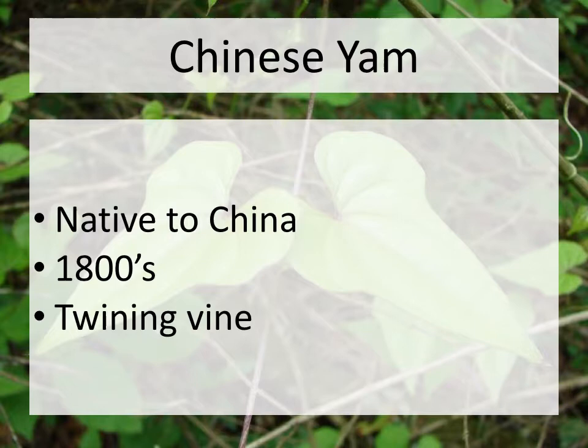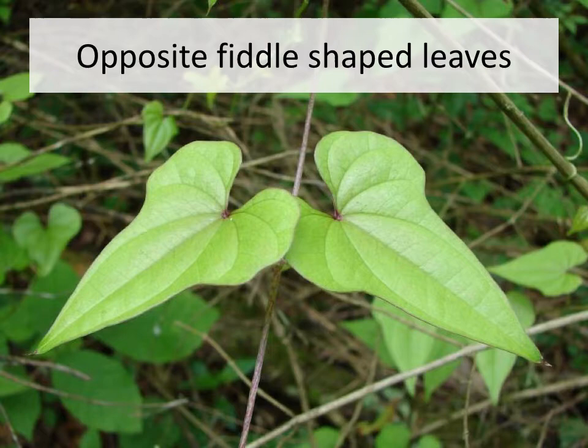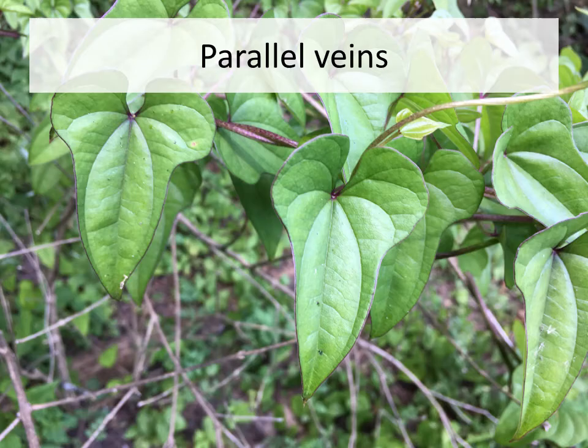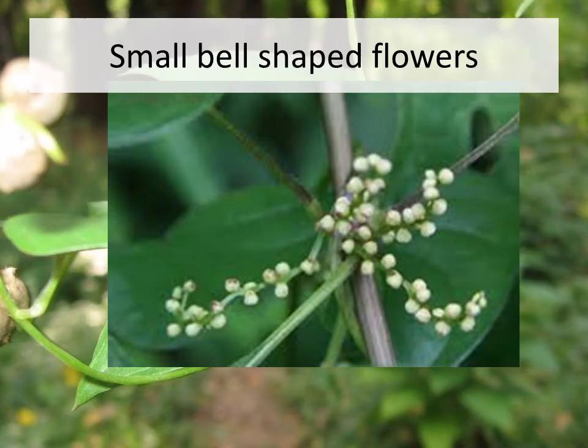Next is Chinese Yam. Native to China, this vine was brought over in the 1800s as an ornamental. Its leaves are fiddle-shaped and grow directly across from each other on the stem. Chinese Yam has strong parallel veins — instead of coming from a central point and branching off, they all come from that middle point and go straight down.